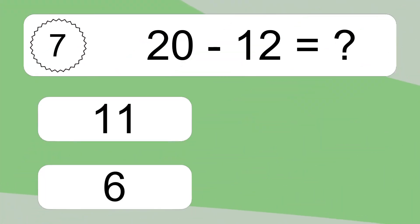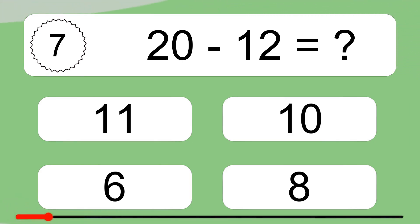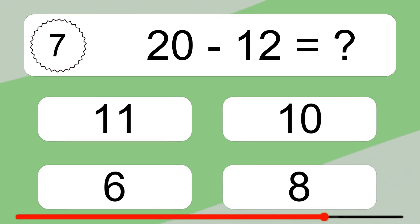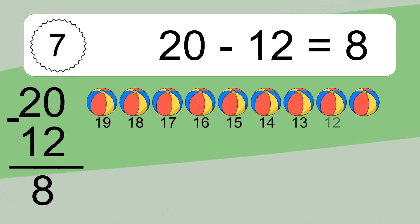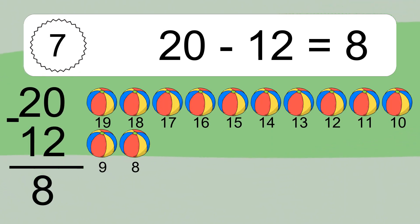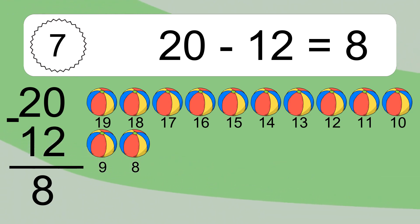20 minus 12 equals what? Let's count it. 19, 18, 17, 16, 15, 14, 13, 12, 11, 10, 9, 8.